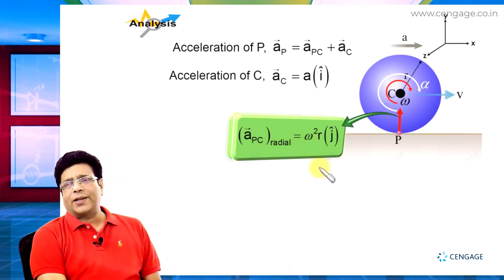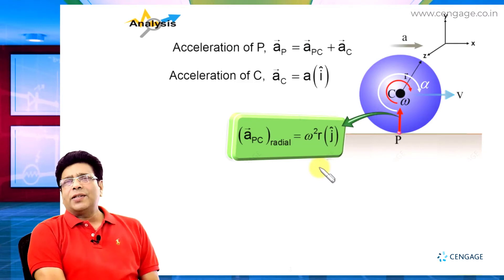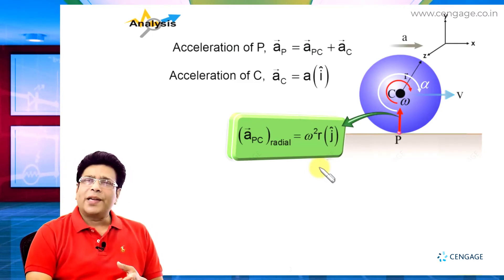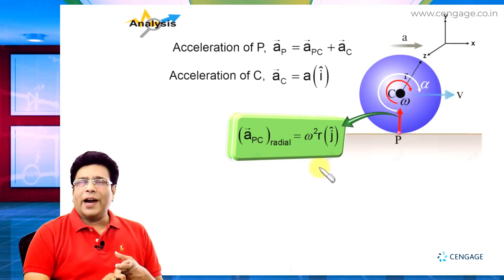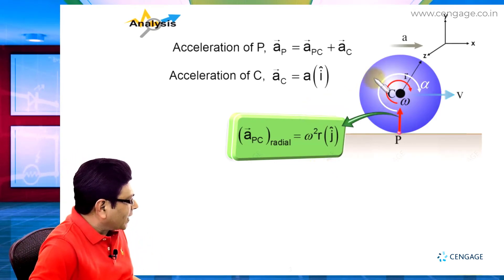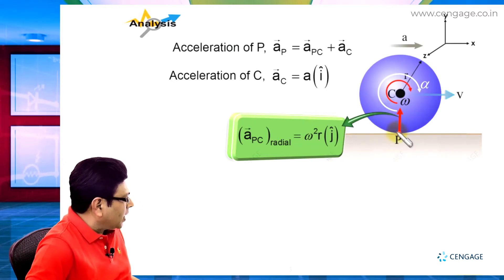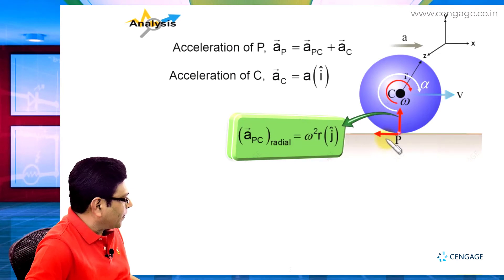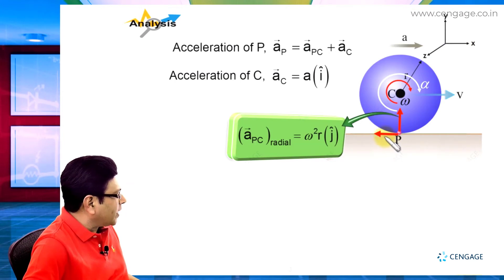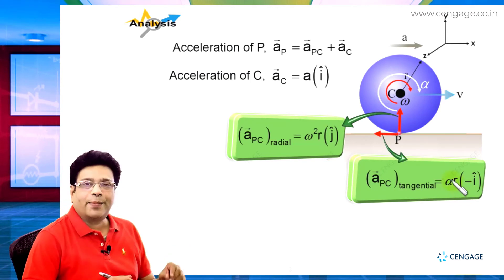Now, for the tangential acceleration: the magnitude is alpha multiplied by r, where alpha is the angular acceleration and r is the radius. The disk rotates in a clockwise sense, meaning the direction of the tangential acceleration at point P is opposite to the positive x direction. So the unit vector for alpha r is minus i-cap, giving a tangential component of minus alpha r i-cap.